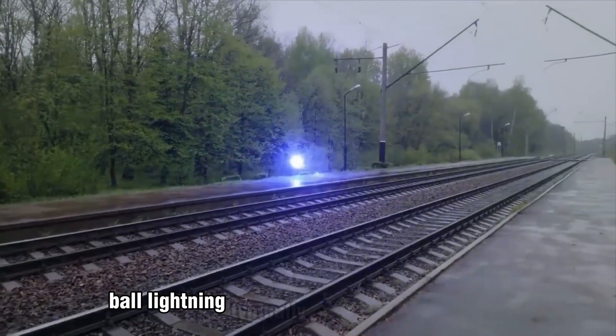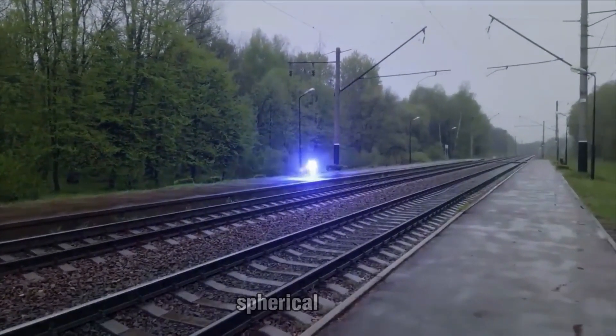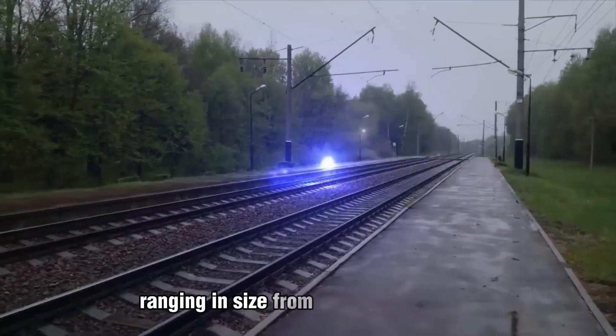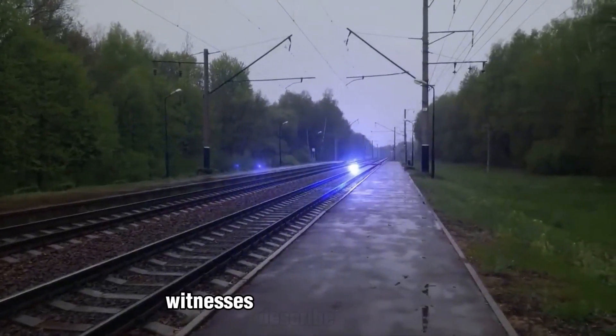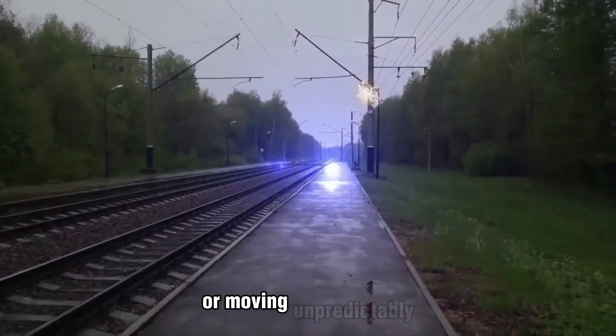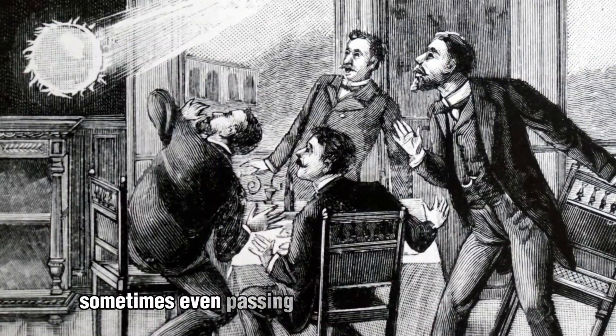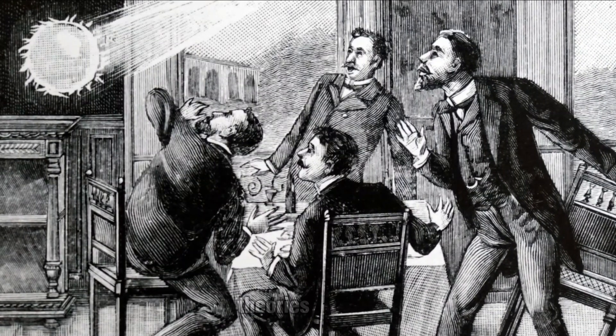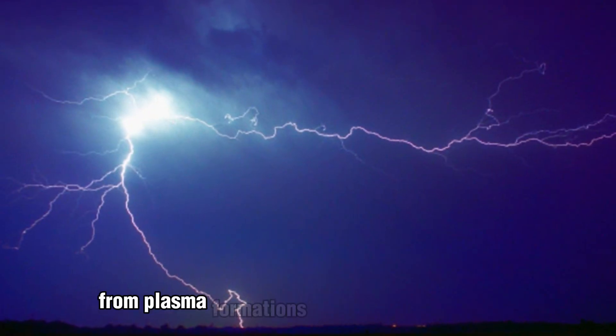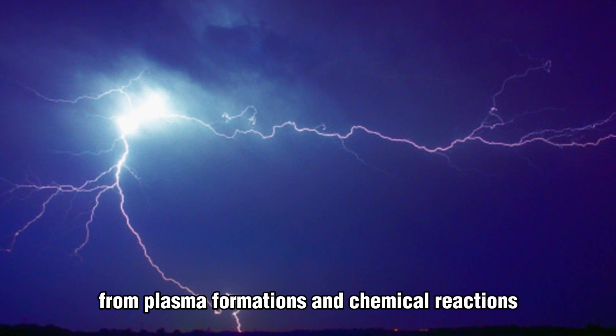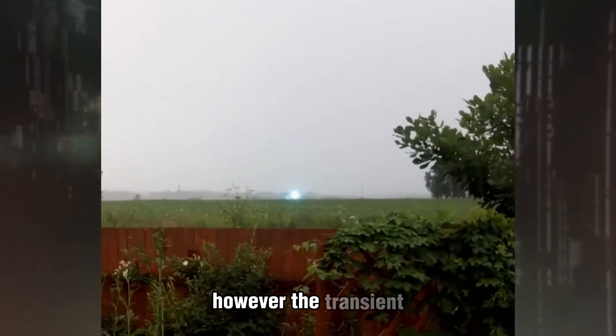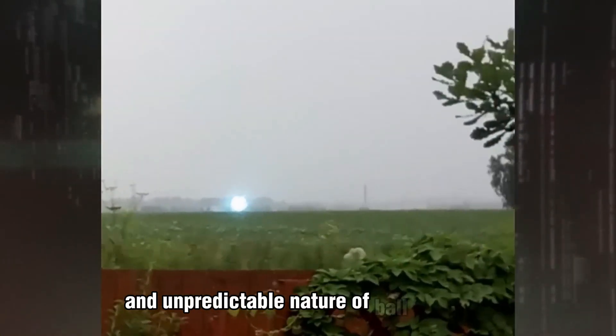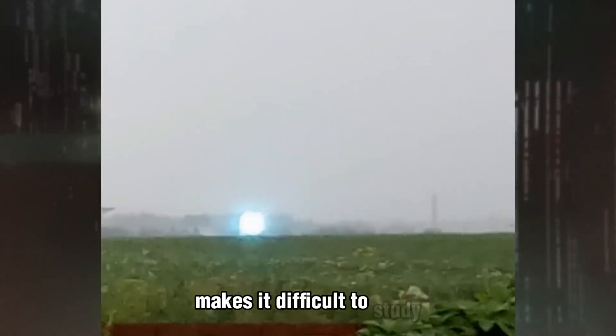Ball lightning typically appears as a luminous spherical object, ranging in size from a few centimeters to several meters in diameter. Witnesses describe it as floating or moving unpredictably, sometimes even passing through walls and windows. Theories abound, from plasma formations and chemical reactions to microwave radiation trapped in a bubble of air. However, the transient and unpredictable nature of ball lightning makes it difficult to study, leaving it shrouded in mystery.